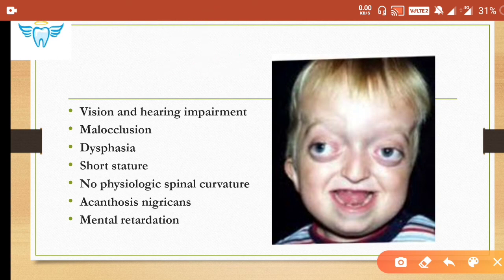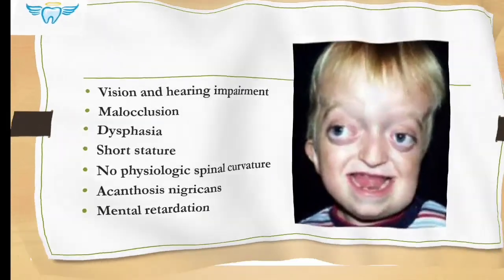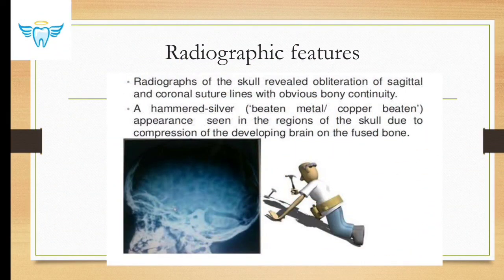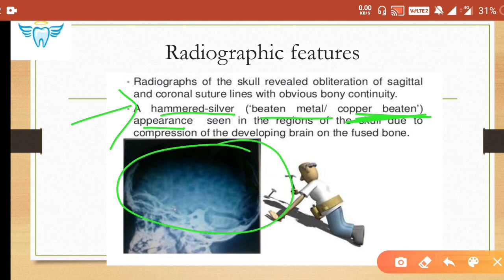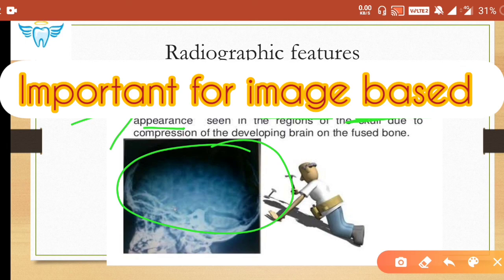Acanthosis nigricans — thickening of the skin in the axillary area — and mental retardation are also seen. Radiographically, skull radiographs reveal obliteration of the sagittal and coronal sutures with a hammered silver appearance, also called beaten metal appearance or copper bitten appearance. Such images can appear in image-based exam questions.